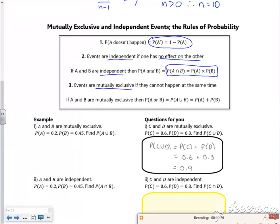Mutually exclusive, they can't happen at the same time. So the A or B is adding them together. Right, so we're going to use these to answer these questions.